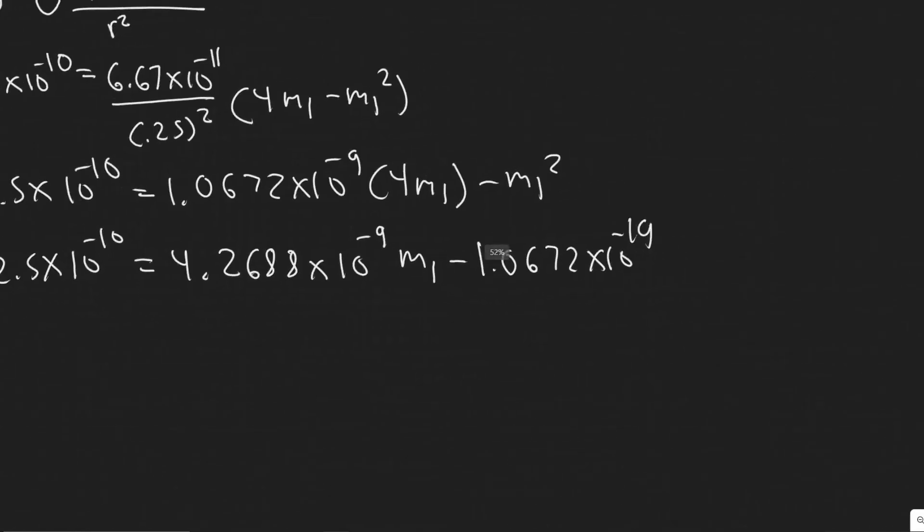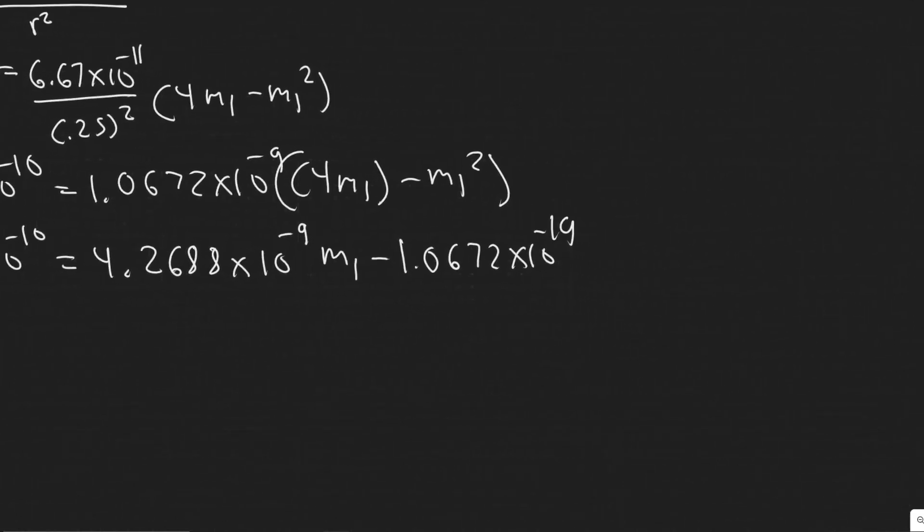So just moving it down even more. 2.5 times 10 to the minus 10 equals, so let me multiply this value by 4, 4.2688 times 10 to the minus 9 m1 minus 1.0672 times 10 to the minus 9. And so keep in mind these were actually in the same parentheses. You're just multiplying it out.